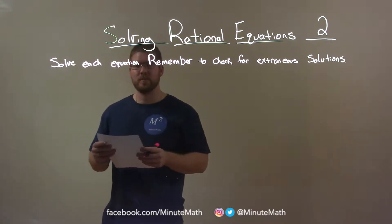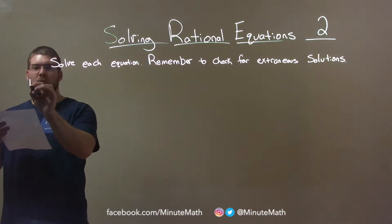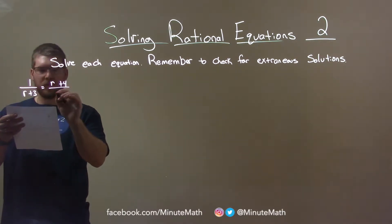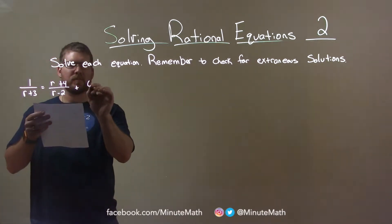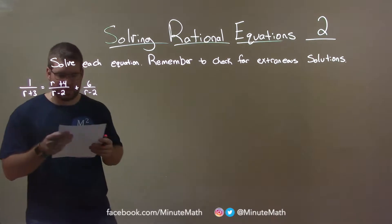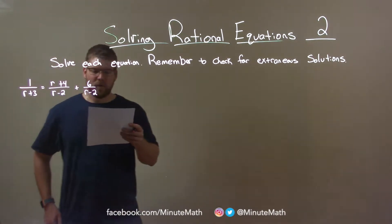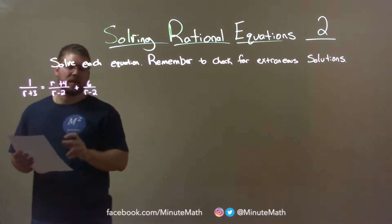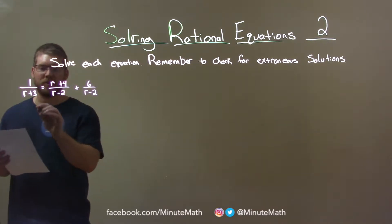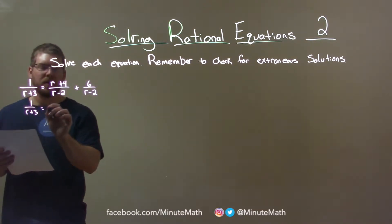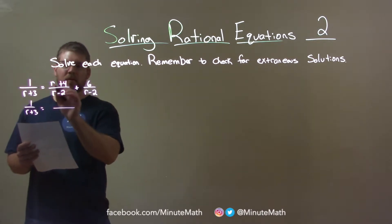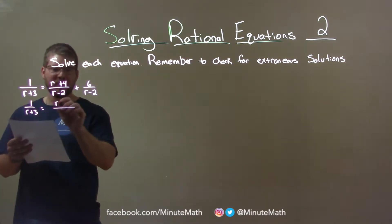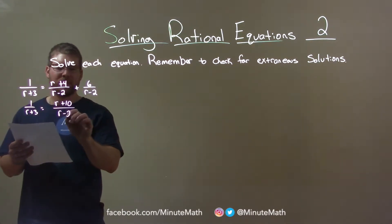So, if I was given this problem: 1 over (r + 3) is equal to (r + 4) over (r − 2) plus 6 over (r − 2). Now, one thing I want to do here — I see the right-hand side has the same denominator already, so I want to combine that together into one fraction. So we have 1 over (r + 3) equals — when we add the numerators — r + 4 + 6 is just r + 10, and the denominator is r − 2.